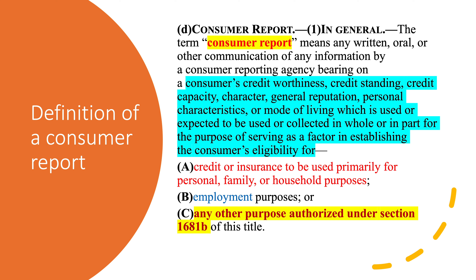We first did section 1681, then this is section 1681A. The next video will be 1681B, where we'll talk about when they have a permissible purpose to pull or use your credit report — which is not exactly the same thing as permission from you to pull your report.